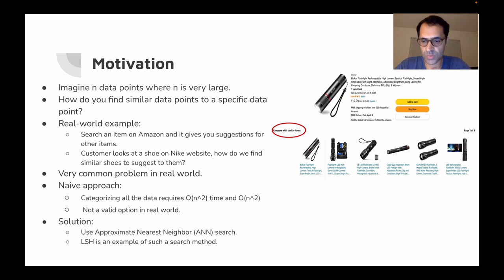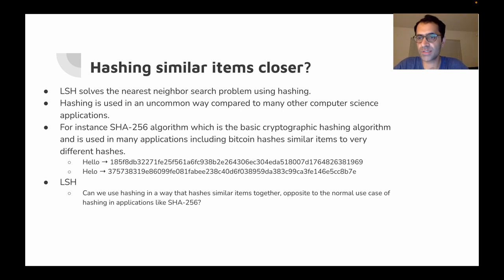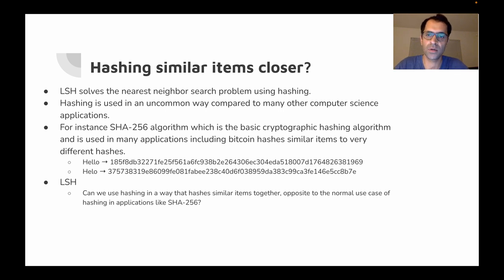Locality sensitive hashing is a solution to this problem — it's basically an approximate nearest neighbor search method. The way it solves this problem is, as the name suggests, through hashing, and this hashing is locality sensitive: it hashes similar items closer to each other. This is a very uncommon way of doing hashing in computer science.